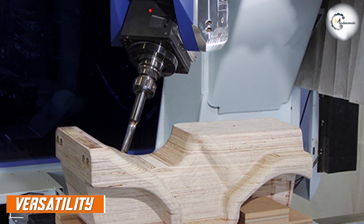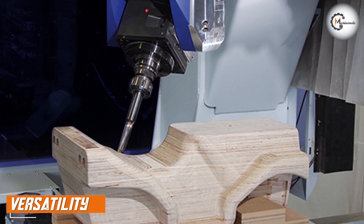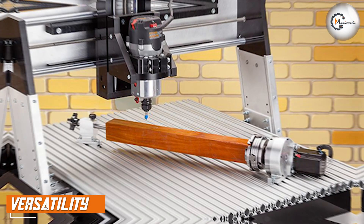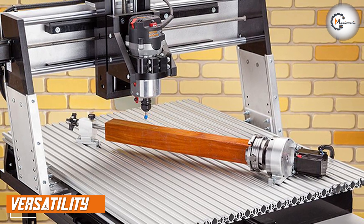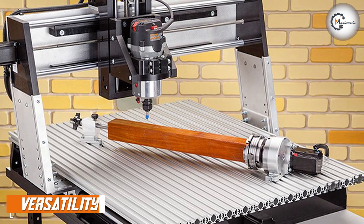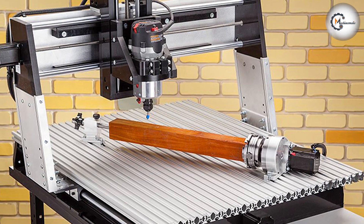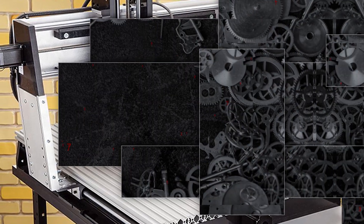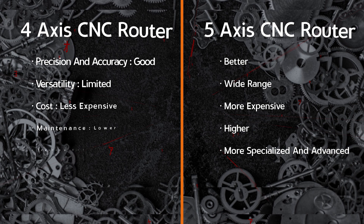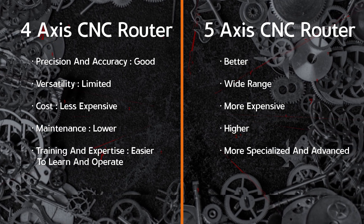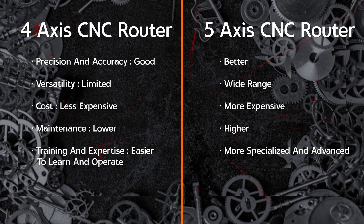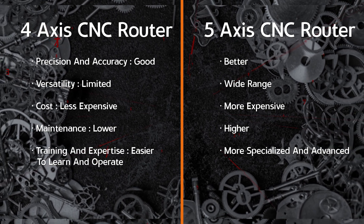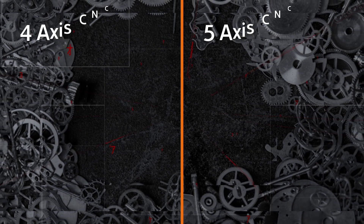A 5-axis CNC router is more versatile than a 4-axis machine, as it can handle a wider range of projects. It is particularly useful for creating molds, aerospace parts, and other complex shapes. A 4-axis machine, on the other hand, is best suited for simpler designs and flat materials.